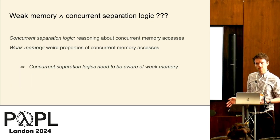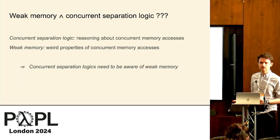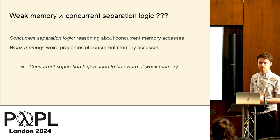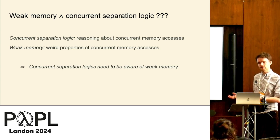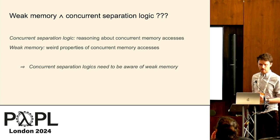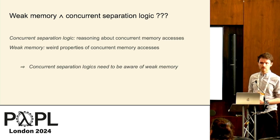Weak memory and concurrent separation logic together have an obvious synergy: concurrent separation logic is about reasoning about the effects of threads on memory, and weak memory is about weird properties of concurrent memory accesses. So we need concurrent separation logics that are aware of weak memory and can deal with them.